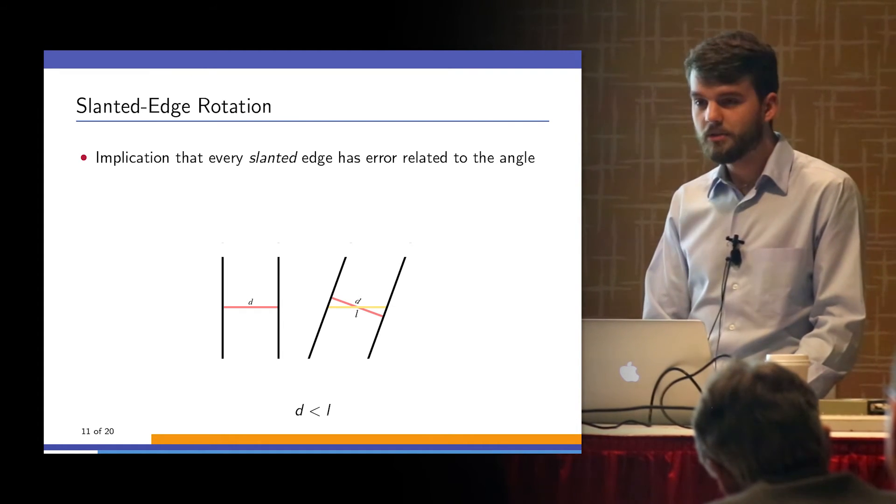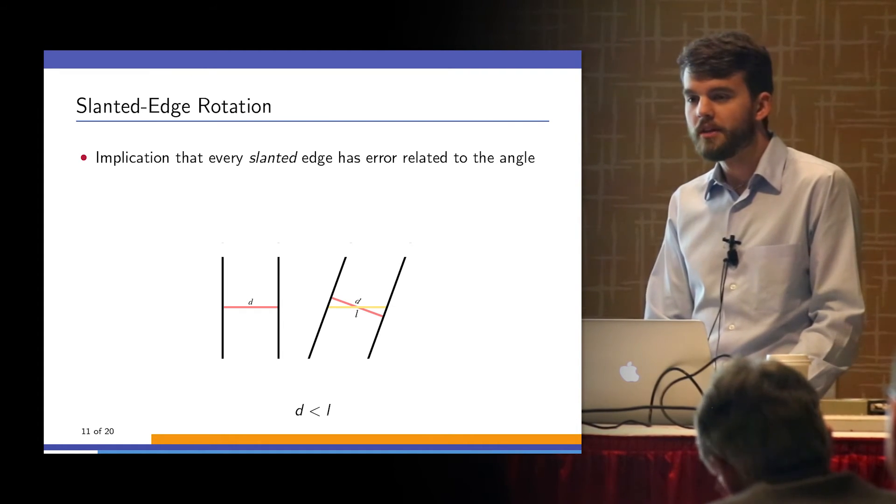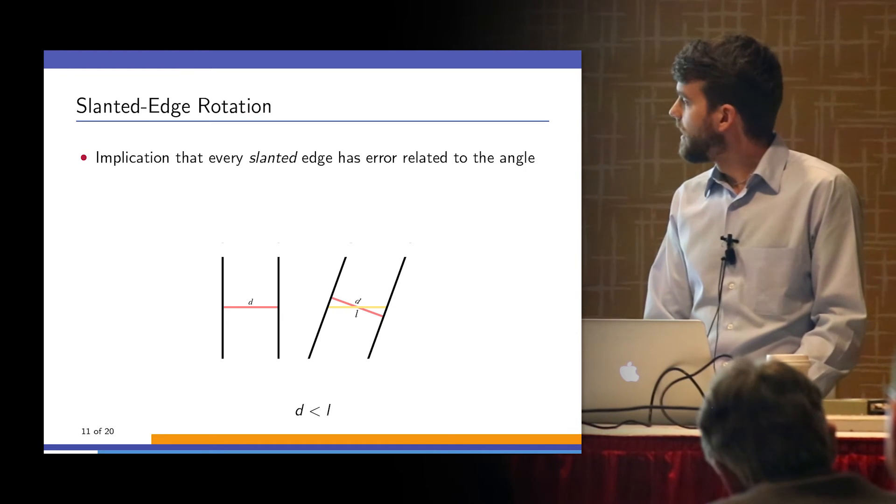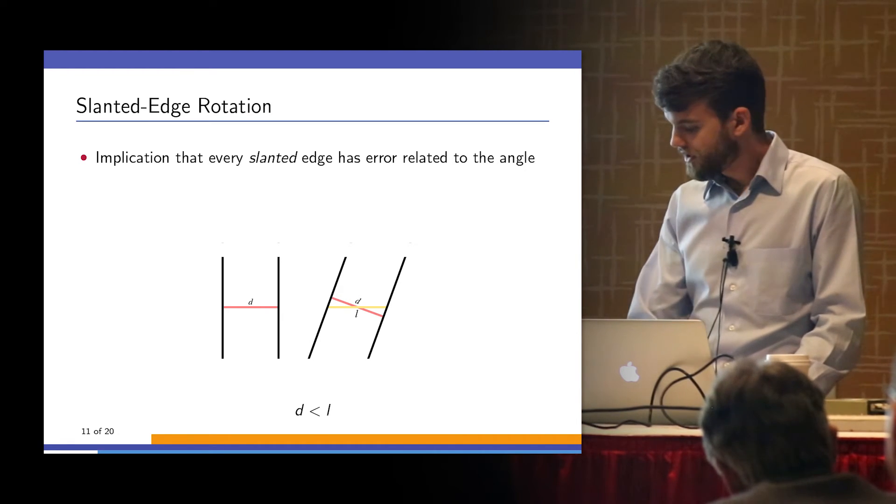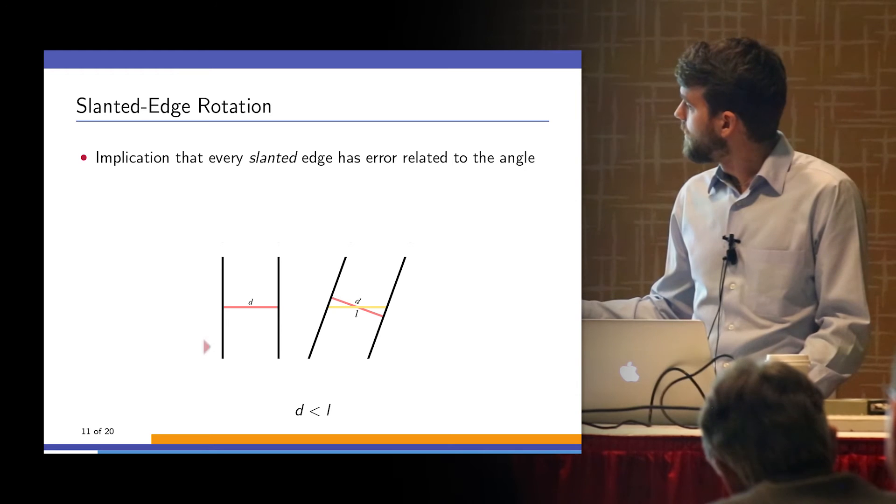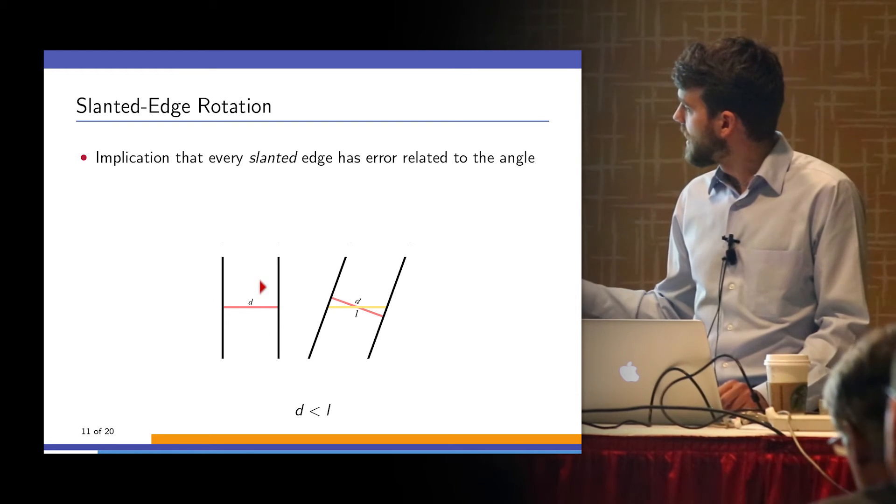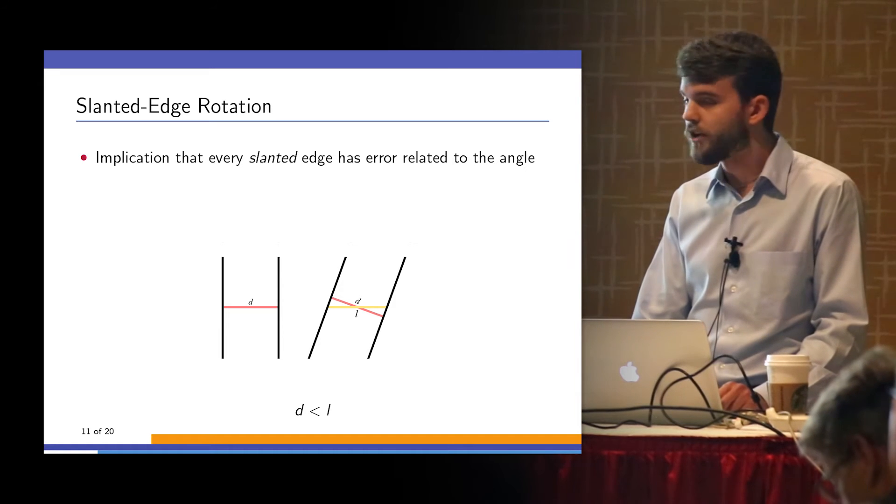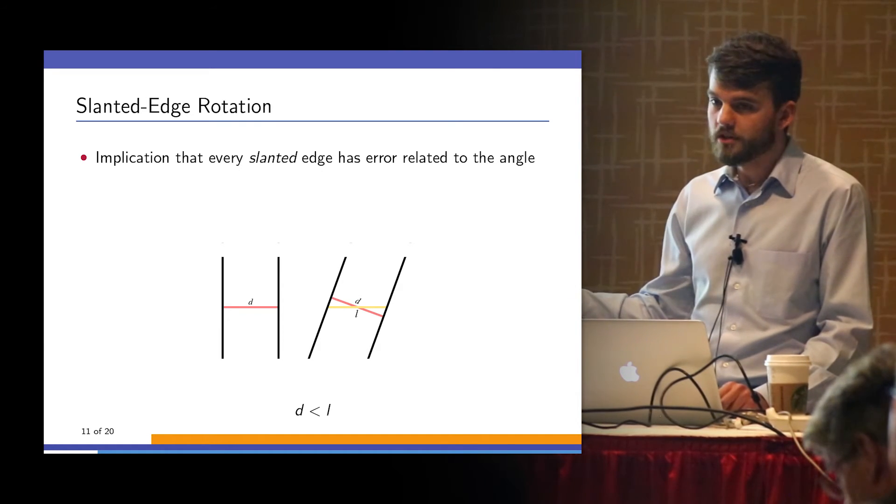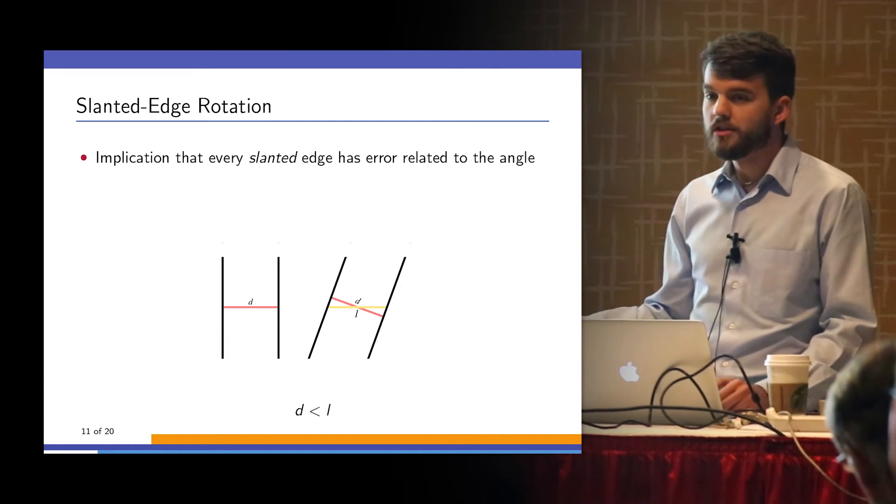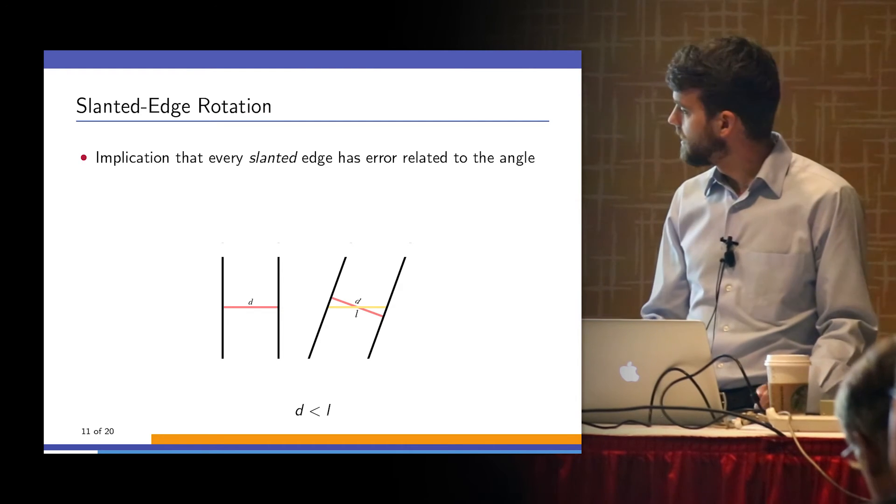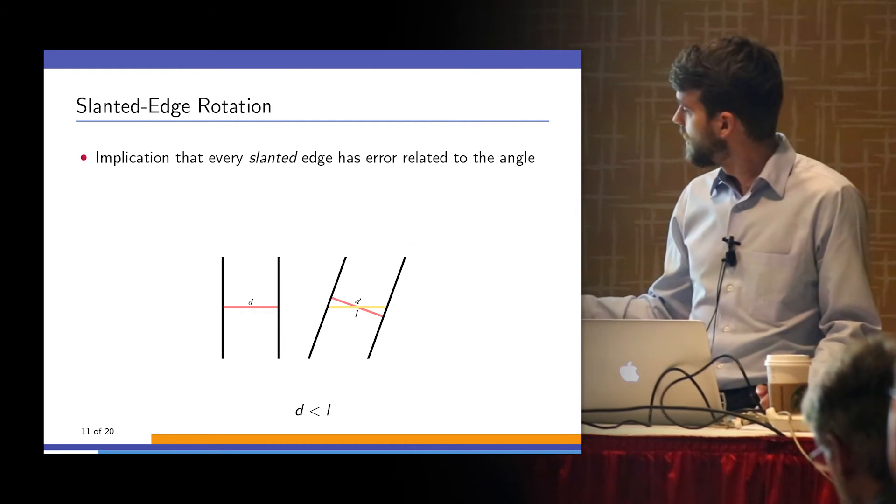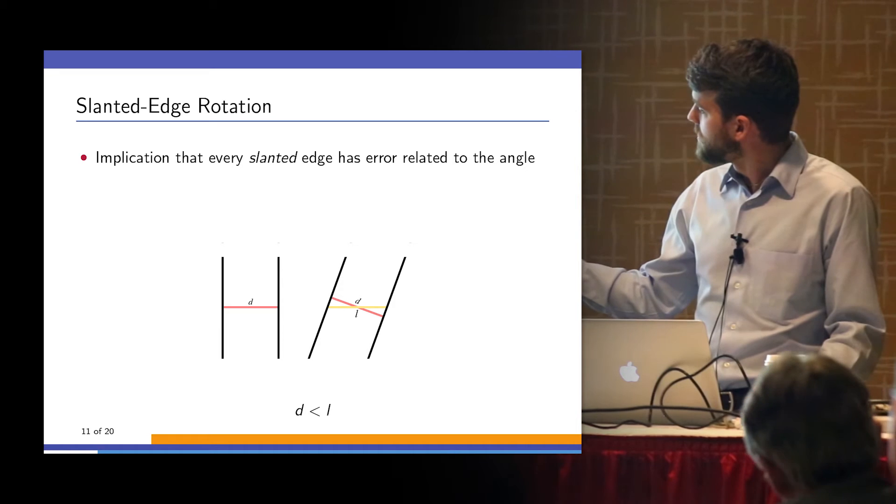It's actually quite simple. There's a really simple geometric way of solving this problem. If you imagine a perfectly vertical edge, the edge spread function taken in cross section, the width of that edge spread function is some width D. If you rotate that same edge, the width perpendicular remains the same, but the width taken in line with the sampling grid changes. Very straightforward, right?